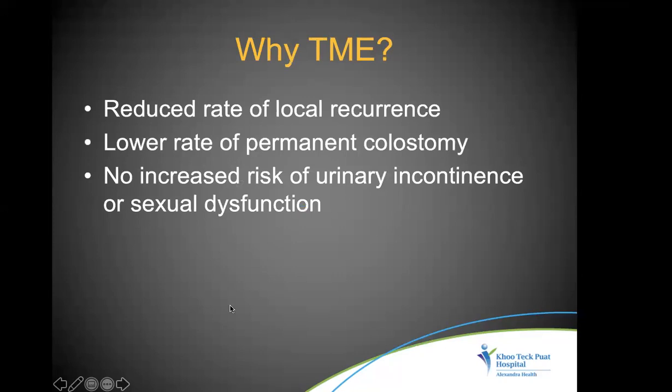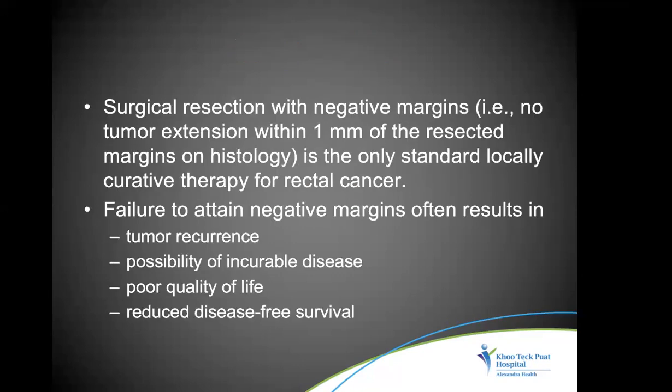Total mesorectal excision reduced the rate of local recurrence and also lowered the rate of permanent colostomy without increasing the risk of urinary incontinence or sexual dysfunction, as had been feared earlier. The most important goal in rectal cancer surgery is achieving a surgical resection with a negative margin — meaning no tumor extension within one millimeter of the resected margin on histology. This is the only standard locally curative treatment.